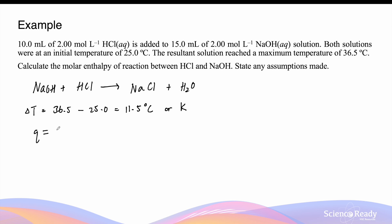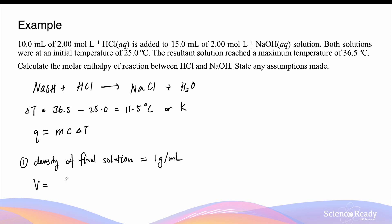We can then use the formula Q = mcΔT to find the energy absorbed by the solution, where m is the mass of the final solution, c is the heat capacity, and ΔT is the change in temperature. To find the mass, we apply our first assumption: the density of the final solution equals that of pure water, 1 g/mL. The final volume is 10 + 15 = 25 mL, so the mass is 25 grams.